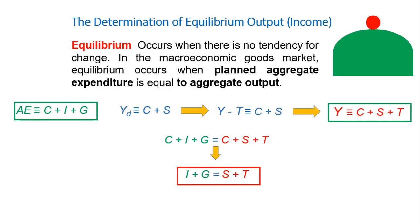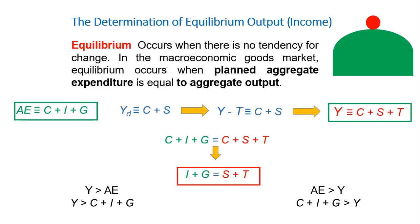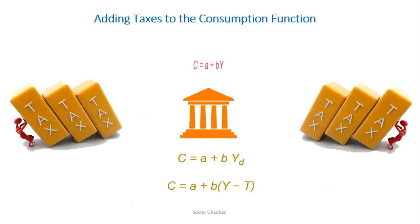We can have points where we don't have equilibrium, such as Y greater than AE or AE greater than Y. We will see later how these points are not stable and there is always a tendency to change, which is why they are not points of equilibrium. The consumption function before the government's role was C equals A plus BY, where C is consumption, B is the MPC or marginal propensity to consume, and Y is output income.